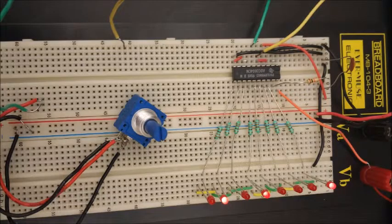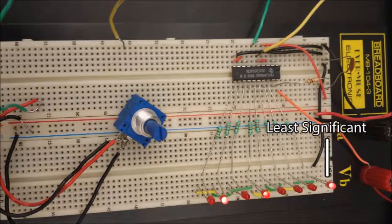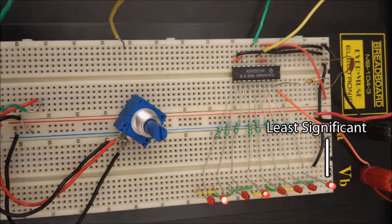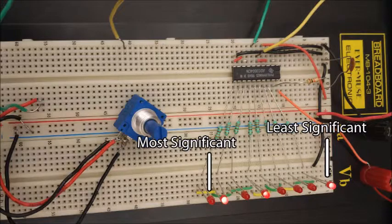The first thing to do is to determine which is the most and least significant bit in the binary array. This can be done by slowly changing the analog input. The LED which flashes on and off the fastest is the least significant bit, meaning the bit which holds the smallest numerical value. By the logic, the LED at the opposite end of the array is the most significant bit, meaning the bit which holds the largest numerical value.